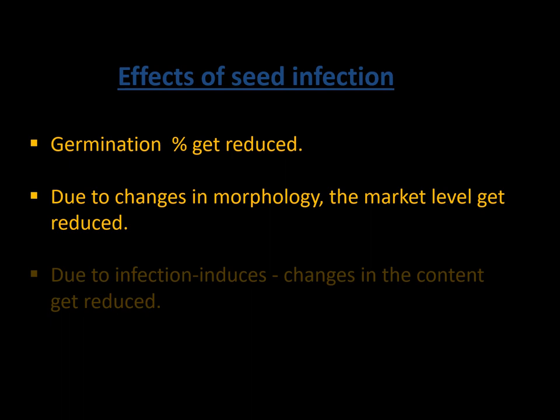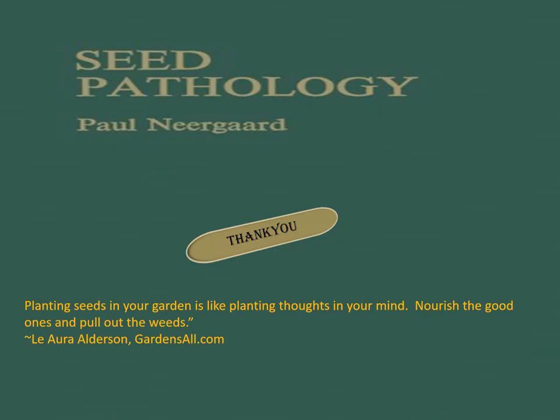The effects of seed infection include reduced germination percentage, drastic reduction in market value due to changes in seed morphology, changes in the content of the seed leading to different taste, and induction of toxic chemical secretions such as aflatoxin, which is carcinogenic. Seed pathology has lots of applications in seed quarantine, seed health, and research. Much of the information here is referred from the seed pathology textbook by Paul Neergaard. If you want to stay healthy, sow healthy seeds in your garden and eat healthy food. Thank you.